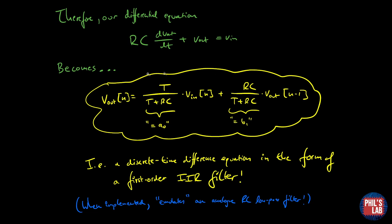As you can see this form is very familiar to us. This is a first order IIR filter which we've got from our analog prototype RC filter. This coefficient over here is pretty much a0 and this coefficient is b1 if we look at the general form of an IIR filter. When we implement this, this actually emulates an analog RC low pass filter. So let's have a look at this on an STM32 system right now.